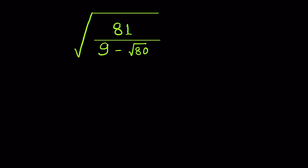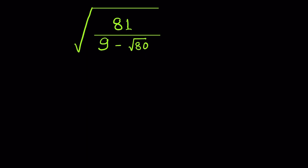We have to simplify √(81/(9 - √80)). We can use two methods to solve it. Let's try Method 1. This expression is in the form of √(a/b), so we can write it as √a upon √b.